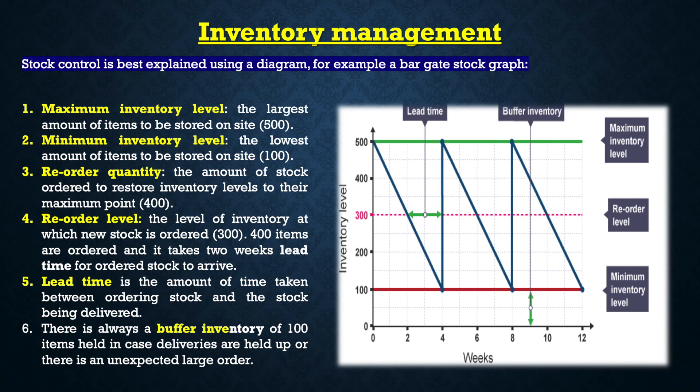Maximum inventory level: the largest amount of items to be stored on site — 500. Minimum inventory level: the lowest amount of items to be stored on site — 100. Reorder quantity: the amount of stock ordered to restore inventory levels to their maximum point — 400. Reorder level: the level of inventory at which new stock is ordered — 300.